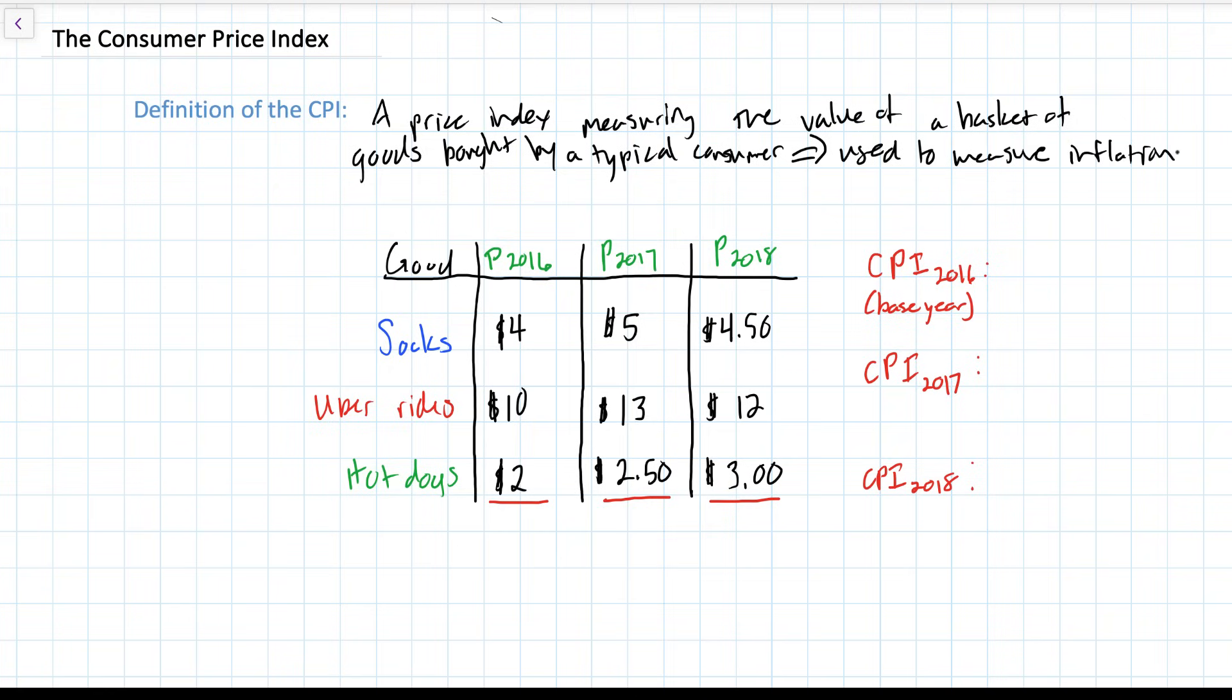To better understand how the CPI works, we're going to use a very simple example here. Let's assume that in a particular country, the typical consumer only buys three goods in a given year: socks, Uber rides, and hot dogs. Of course, this is an oversimplification. In a real country, consumers would buy all sorts of goods. For the simplified example, however, we're assuming that the typical consumer only buys these three goods. What we have here are the prices of each of these goods over three years in 2016, 2017, and 2018.